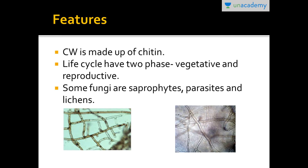Their cell wall is made up of chitin, and their life cycle has two phases: vegetative phase and reproductive phase. Since fungi are heterotrophic, some are saprophytic, some are parasitic in nature, and some form lichens.